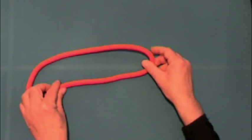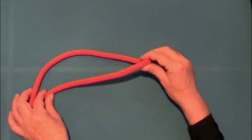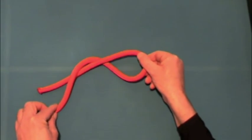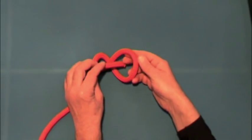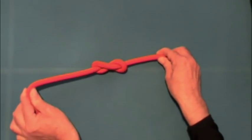First we create a bite, which is a half loop. Then we twist it over on top of itself and then feed the tailing end back through the loop.